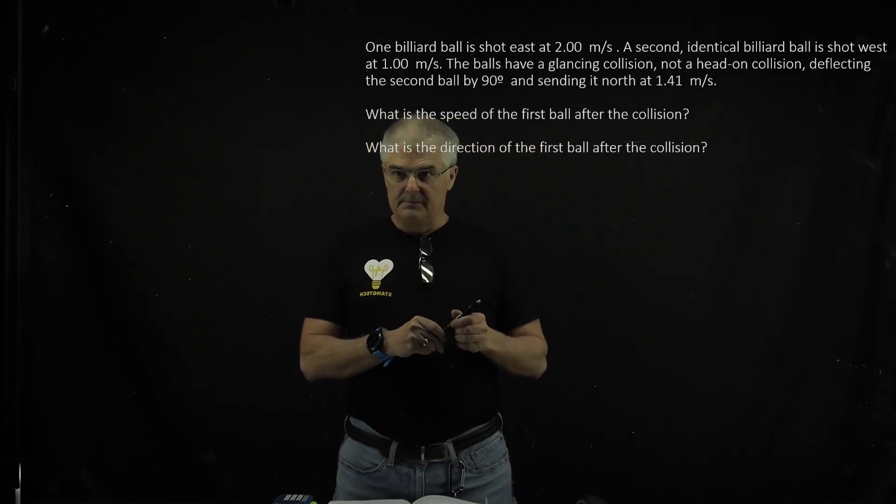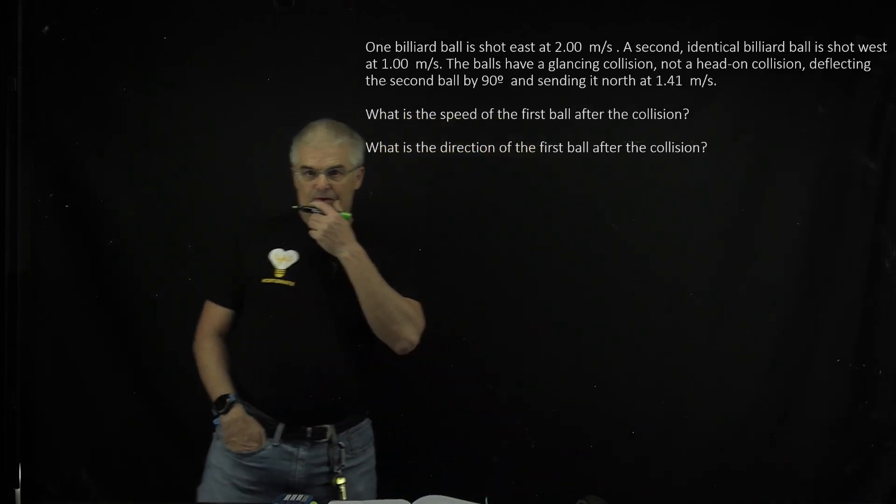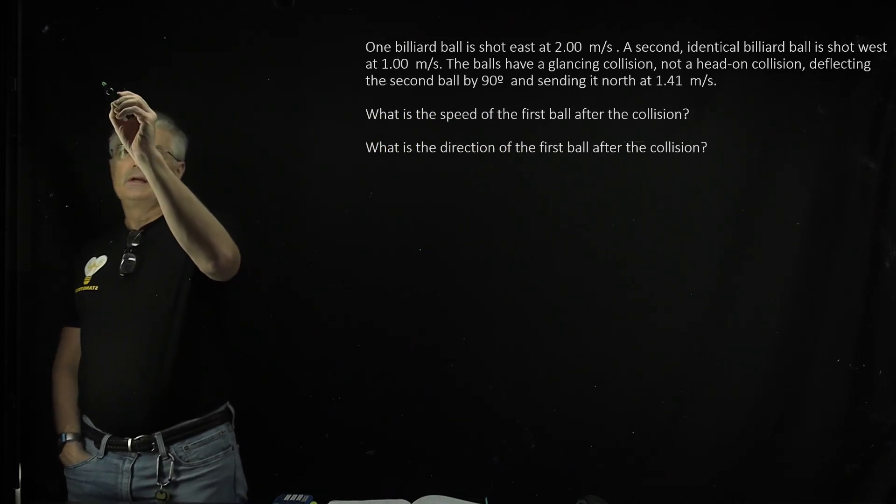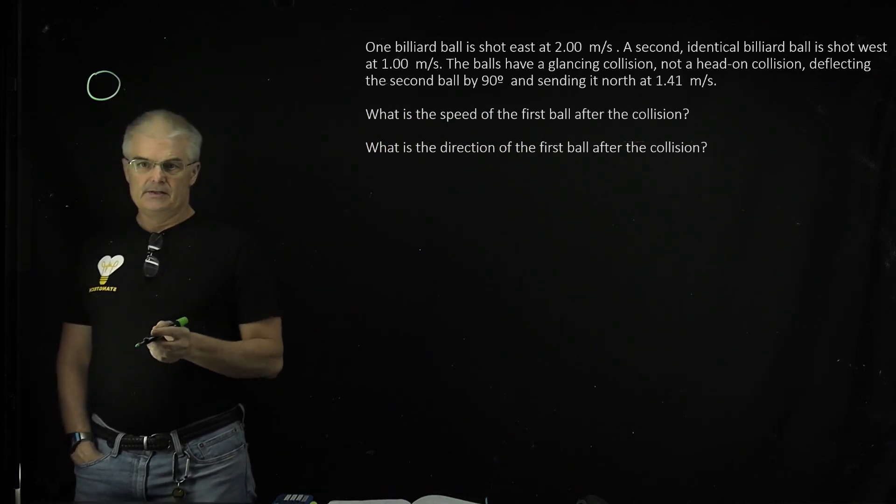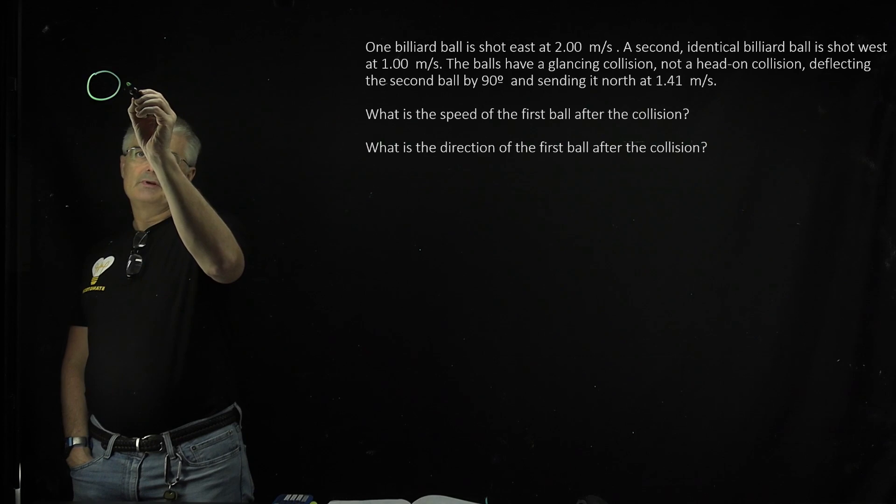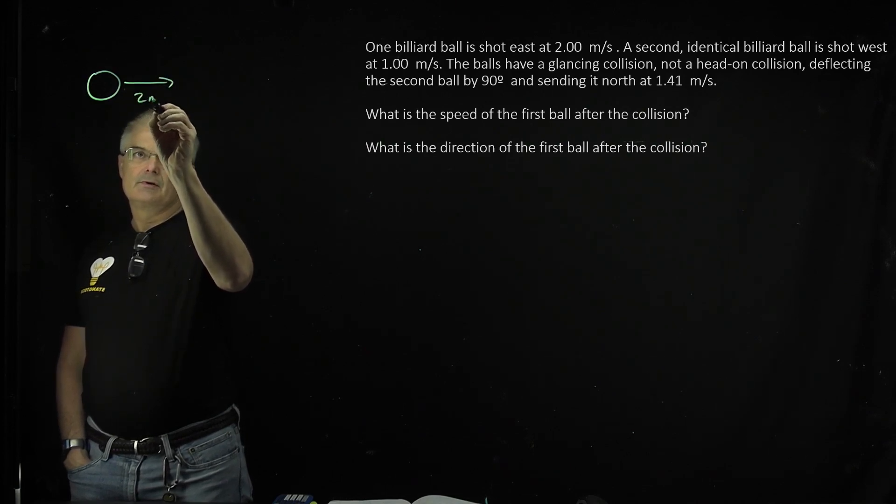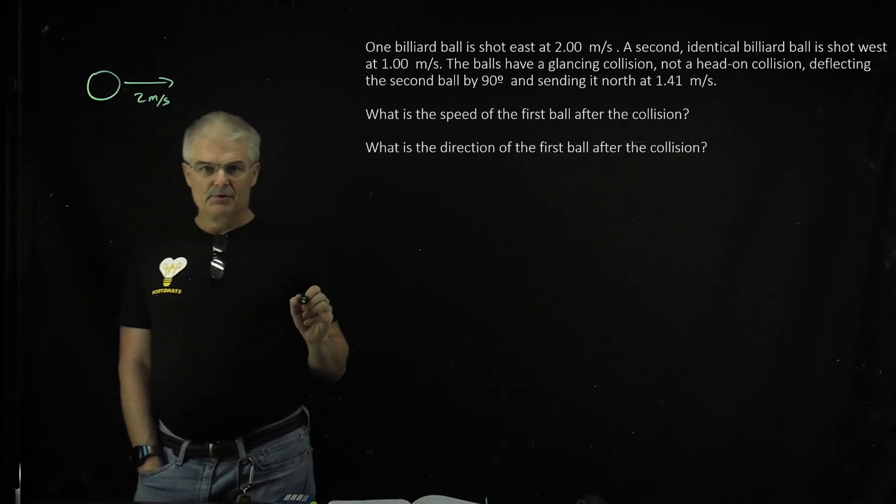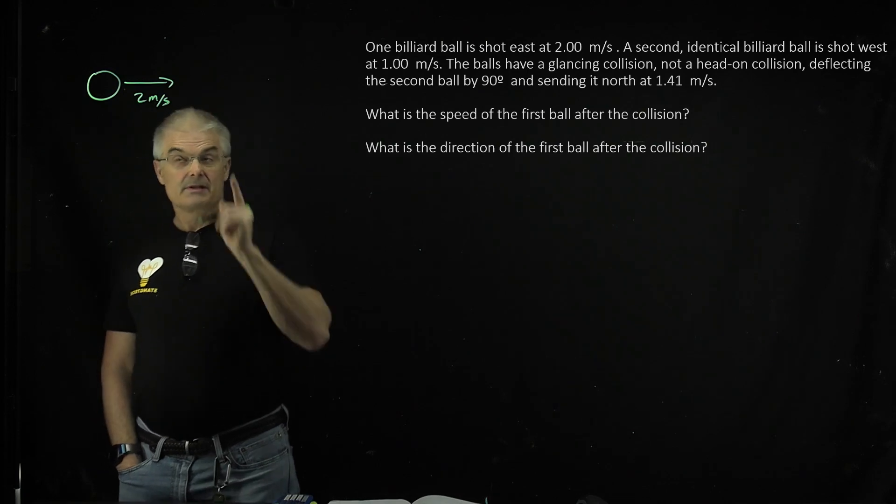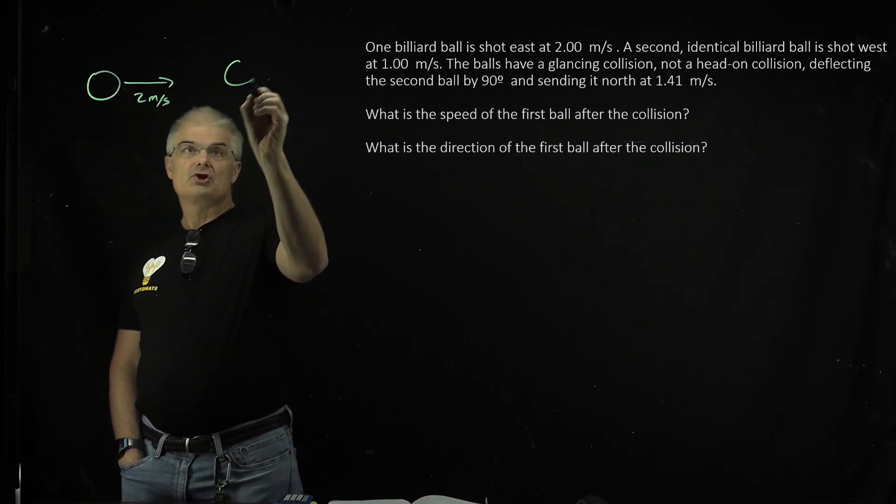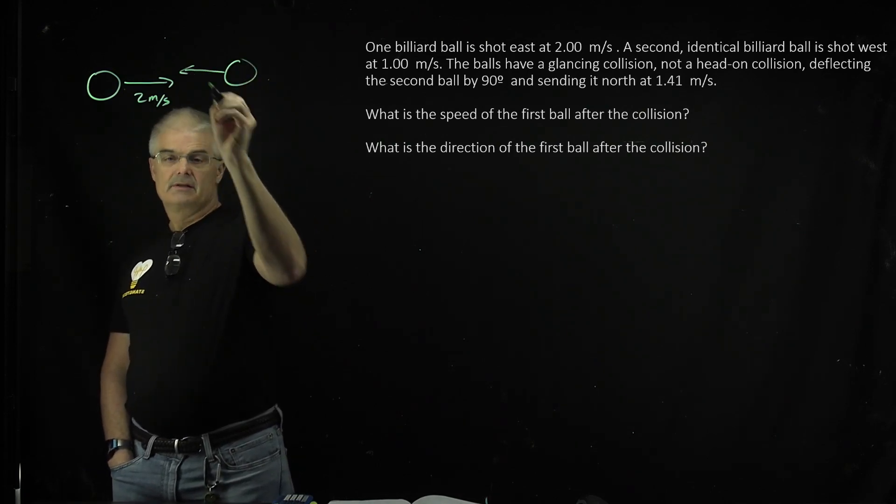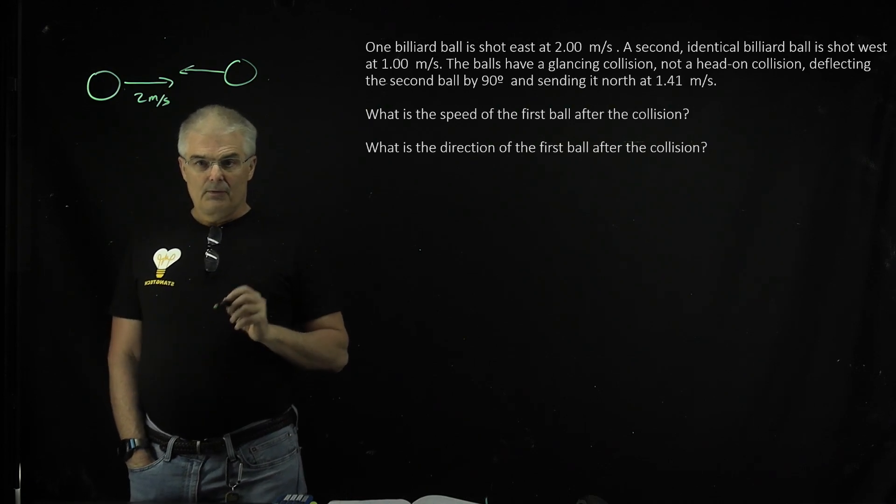It's a billiard ball problem, so let's see if we can figure this out. One billiard ball is shot to the east at 2 meters per second. A second billiard ball, identical, so that means it's going to have the same mass, is shot to the west at 1 meter per second.